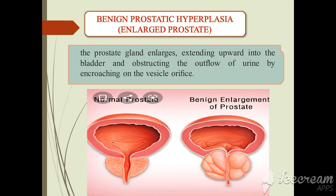Other conditions include benign prostatic hyperplasia — an enlarged prostate. The prostatic gland enlarges, extending upward into the bladder and obstructing the outflow of urine by encroaching on the vesical orifice. As described in the picture, to the right is a normal prostate, and to the left is a benign enlargement of the prostate.